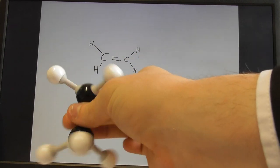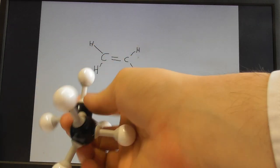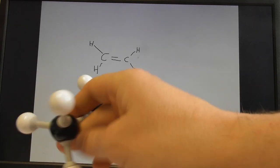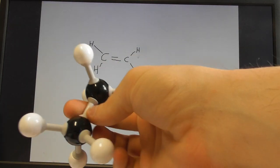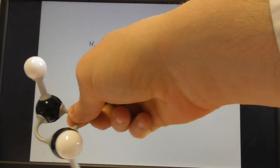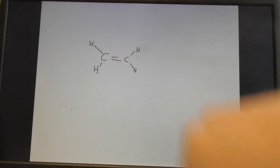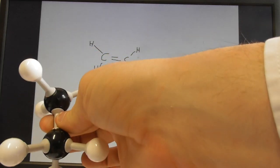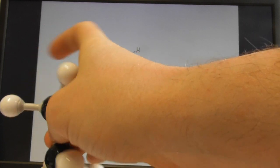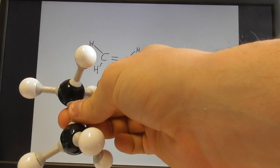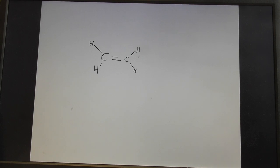That's ethene — the first member of the alkenes — and ethane is the second member of the alkenes. The carbons in ethane are tetrahedral, bonded to four different atoms. The family of compounds we want to look at today actually has a triple bond between the two carbons.